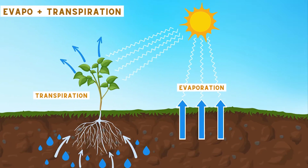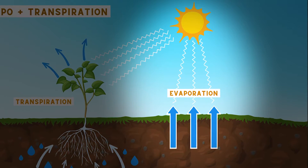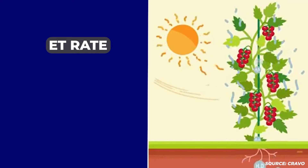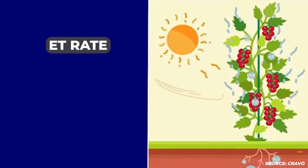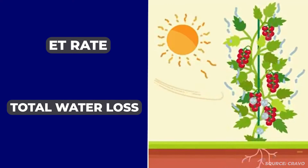That's transpiration. Then you have evaporation, which is simply water evaporating from the surface of the ground — from the soil itself. Both transpiration and evaporation represent water loss from the soil. So the evapotranspiration rate is often used to describe the total water loss in the soil due to evaporation and transpiration.